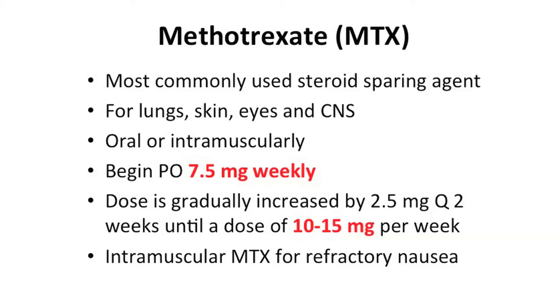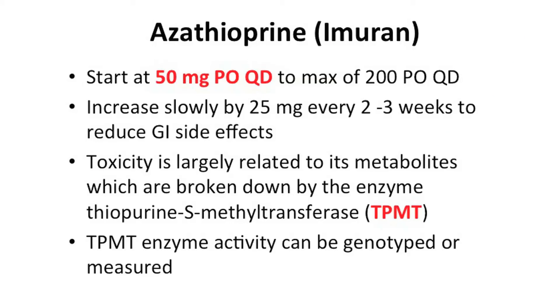I want to spend some time on the steroid-sparing agents we use in sarcoid. Methotrexate — what you need to know for board exams is it can be toxic not only to the bone marrow but to the lungs. You can give the dose orally weekly or as an IM injection; I usually start around 7.5 milligrams weekly. Please don't forget the folic acid. Another drug is Imuran (azathioprine), which can be toxic to the bone marrow. We want to make sure patients can metabolize the drug, so we may order TPMT — the enzyme that breaks down the toxic metabolites of Imuran.